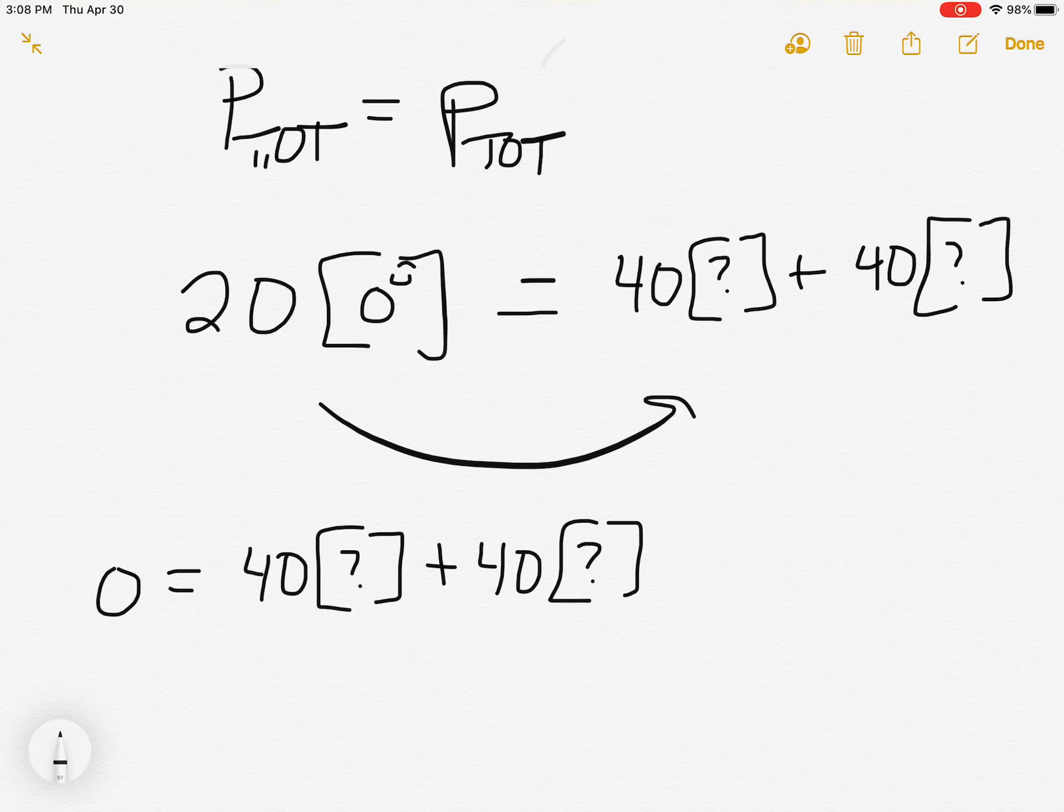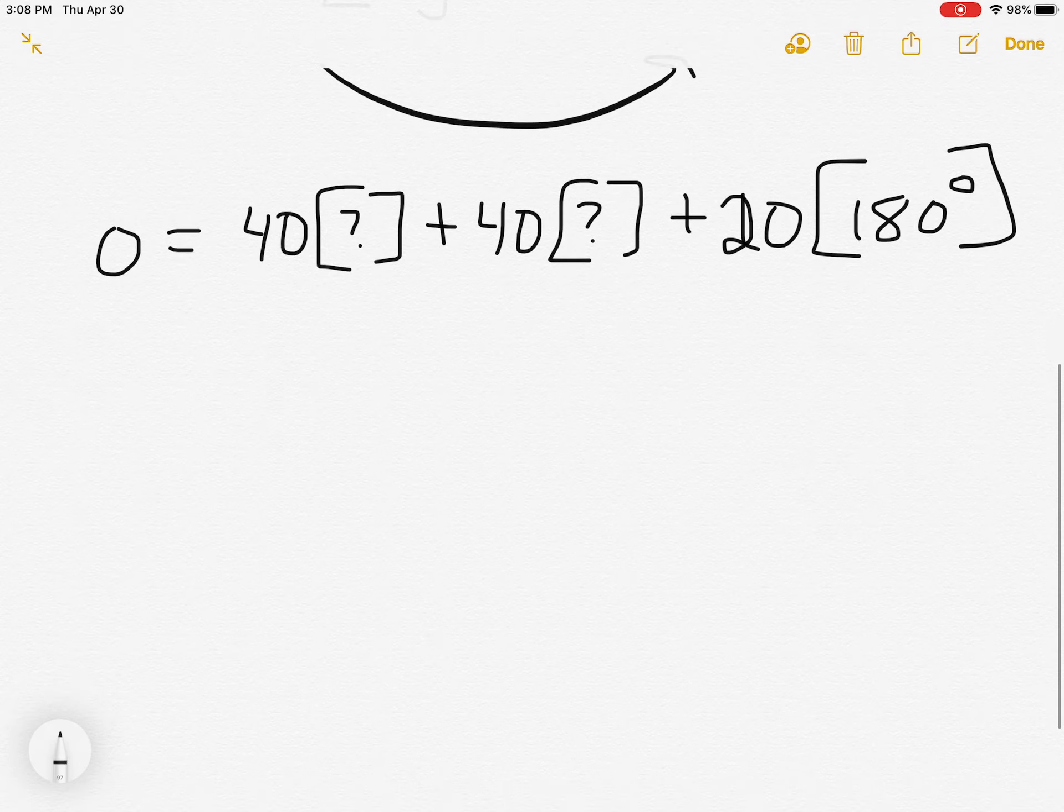Now it'll be minus 20 at zero when we move it over, but the way you do minuses with vectors is by reversing them by 180 degrees. So minus 20 at zero is the same as adding 180. So 20 at 180 degrees.